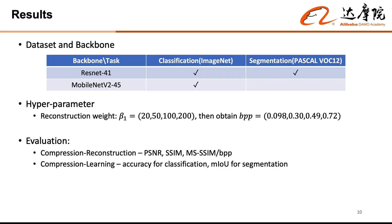We use a 41-layer ResNet-like network to demonstrate learning from the compressed domain for both classification and segmentation. We also demonstrate a 45-layer MobileNet V2-like network for classification. The number of layers are chosen to match the computation complexity of prior art, to show our improved accuracy at the same FLOPs.